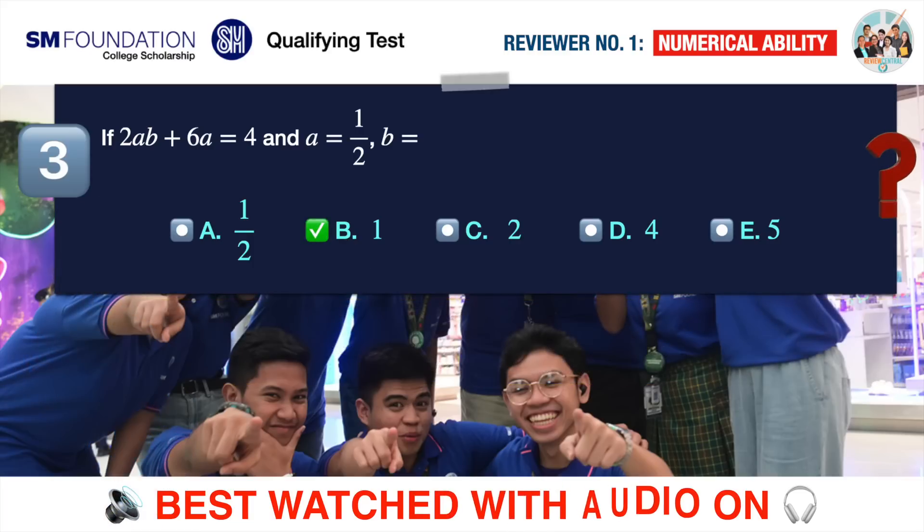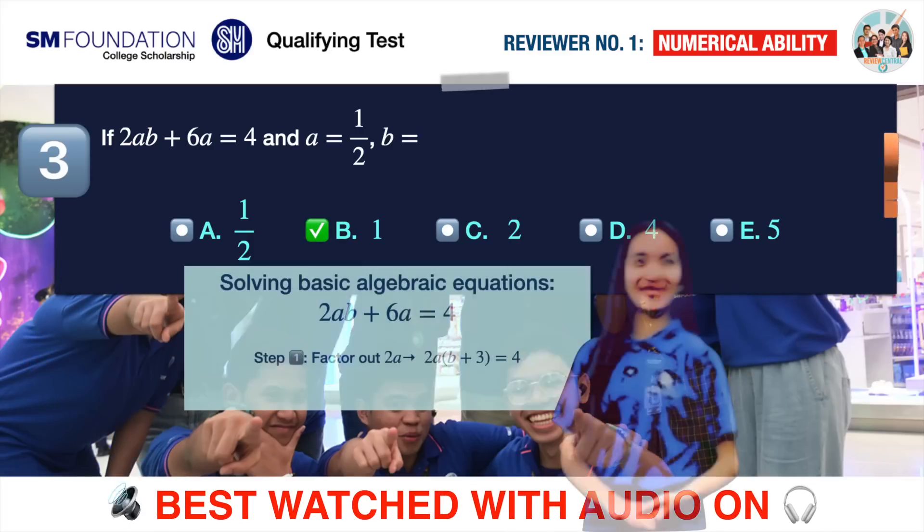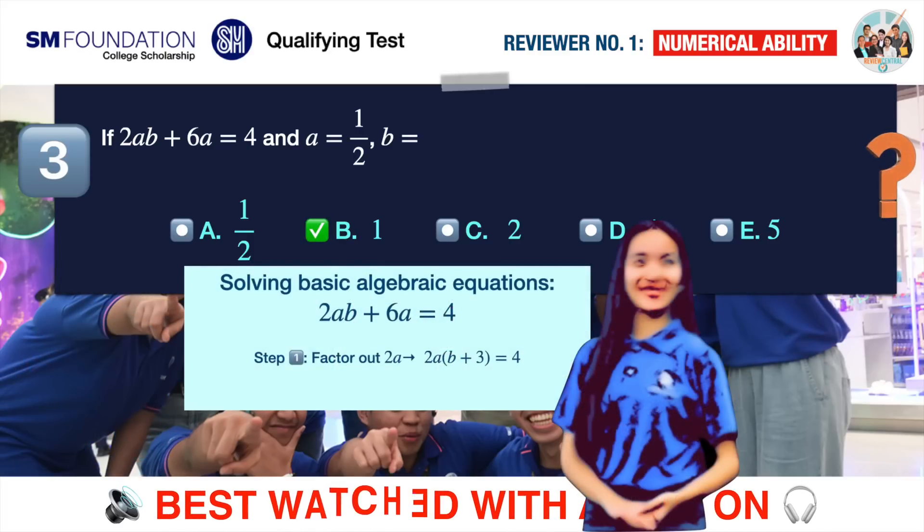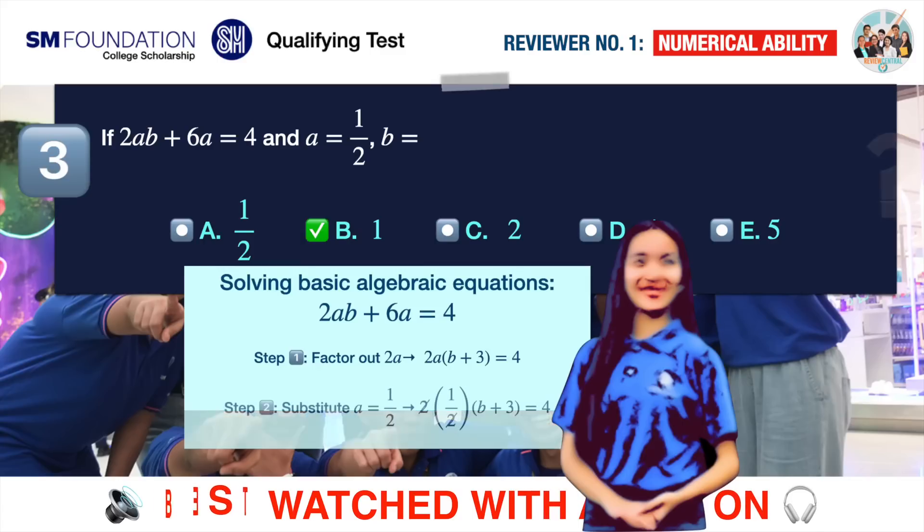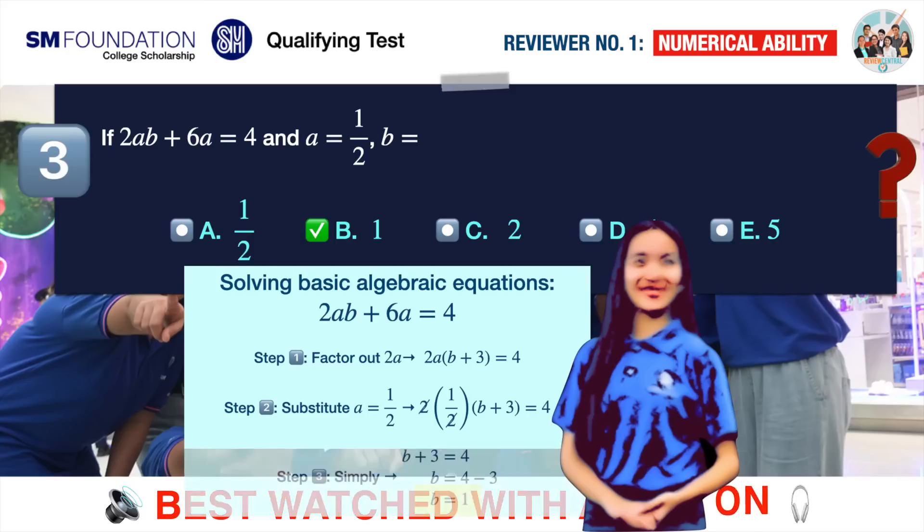The correct answer is B. 1. This is a simple algebraic equation. To solve for B, we first factor out 2A from the left side of the equation. Then we substitute the value of A. Simplifying, we should quickly arrive at B equals 1.